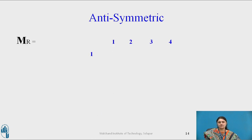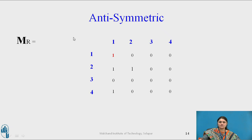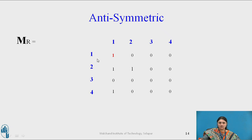Now let us move to antisymmetric. Antisymmetric is similar to symmetric, but here we allow diagonal entries. If R(i,j) equals 1 and i is not equal to j, then R(j,i) must be 0. For example, (1,1) is 1 — diagonal entries are allowed. If (2,1) is 1, then (1,2) should be 0. If (1,2) is indeed 0, it is antisymmetric.